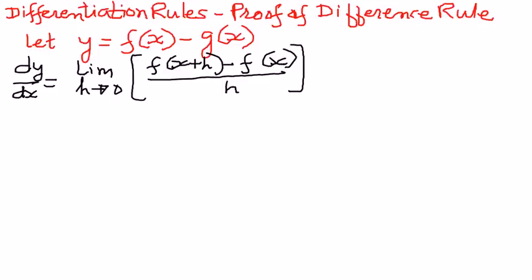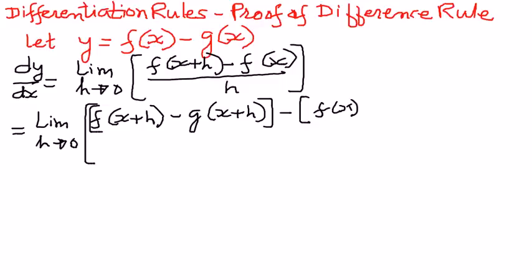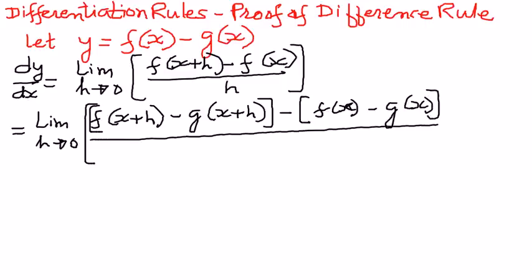Then, substituting the given function into the formula, we have the limit as h approaches 0. We can write this one as f of x plus h minus g of x plus h — this is one part — minus f of x minus g of x. The whole thing divided by h.